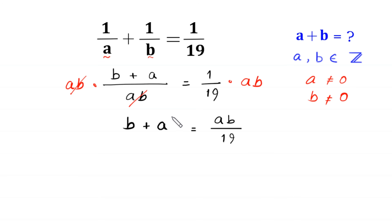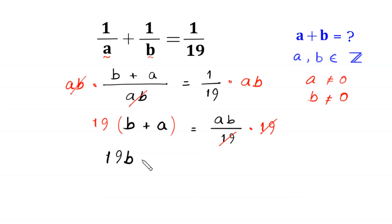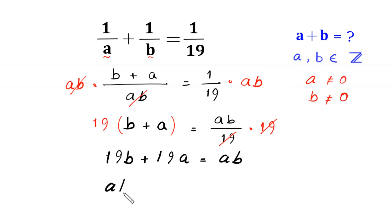Now we multiply both sides by 19. This 19 cancels with the 19 on the right, giving us 19b plus 19a is equal to ab. Now we move these two terms to the right hand side, so this becomes ab minus 19b minus 19a is equal to 0.